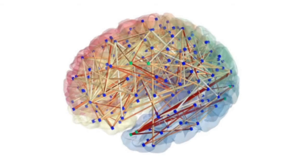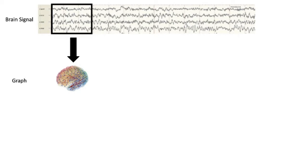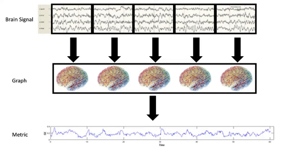First, chronnectomics — what I mean is the following: to construct a brain network we need a few pieces in place. First, we need the brain signal — in this study it's EEG, but it could be fMRI. Then we segment the data and calculate a connectivity measure, creating a graph. Here it's PLV, phase locking value. We create more graphs from more segments, calculate metrics like global efficiency, and taking those graphs as a time series we extract one number per graph. This is a chronnectome.